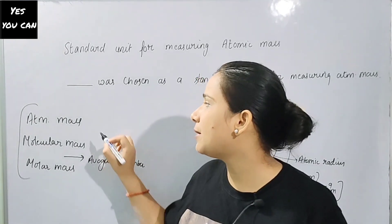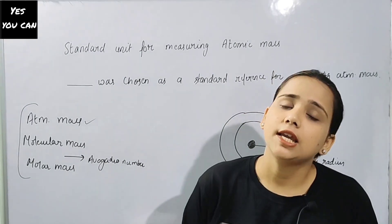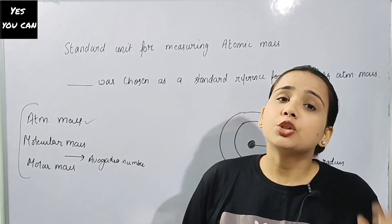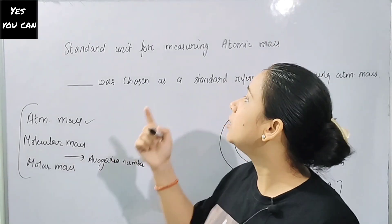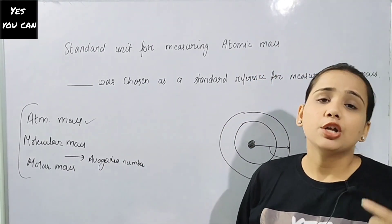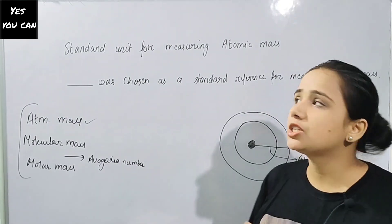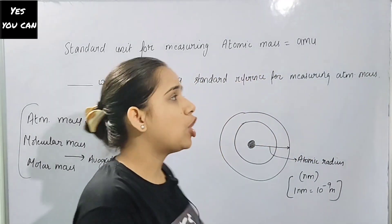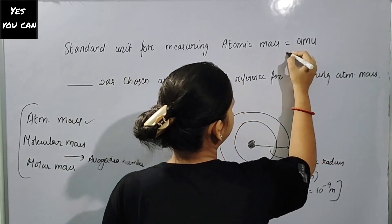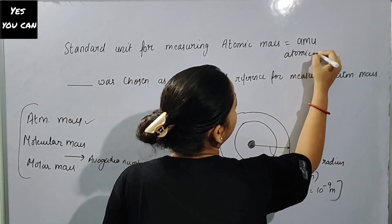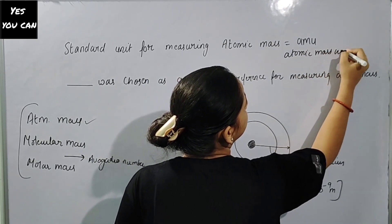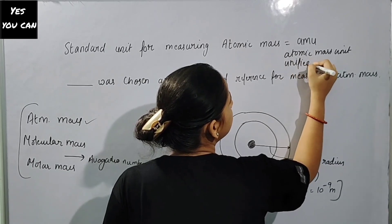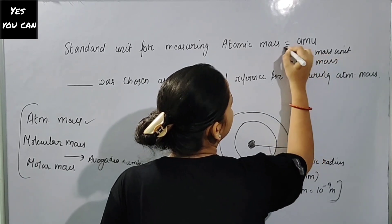So it is understood that our atomic mass will also be very small. So we should have some kind of standard unit for measuring the atomic mass. We call this standard unit the AMU — atomic mass unit. Or we also call it unified mass. We call it by both of these names.